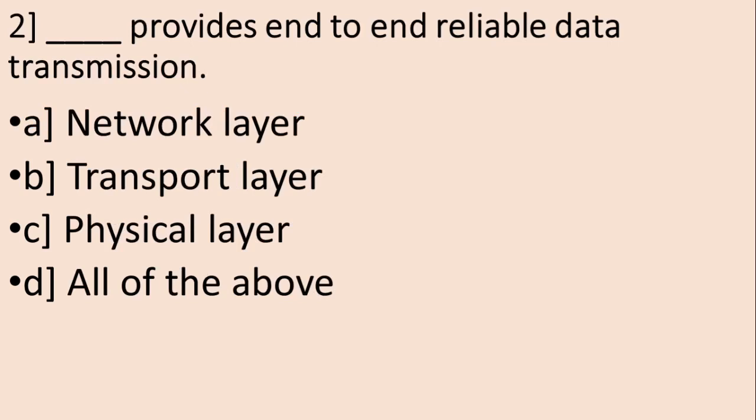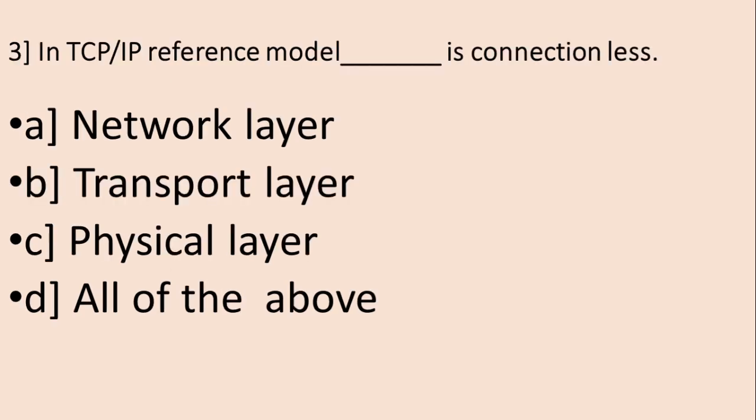Question number 2: Dash provides end-to-end reliable data transmission. The options are: A. Network Layer, B. Transport Layer, C. Physical Layer, D. All of the above. The correct answer is B, Transport Layer.